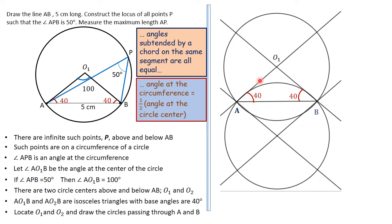For O₂, stand with the protractor upside down at each end of AB, drawing lines at 40° below AB; where they meet is O₂, where the angle at center is 100°. Stand there and draw the second circle. The two circles intersect at points A and B. Point P can be anywhere on the major arcs — all those points are valid positions for P.